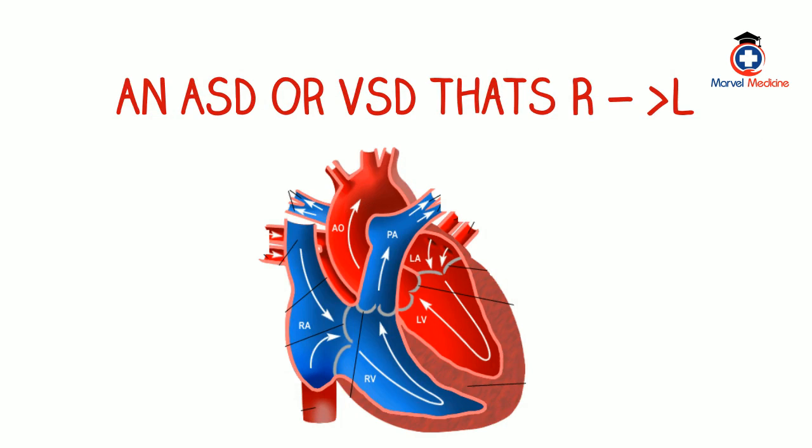What's another way to describe a shunt? An ASD, atrial septal defect, or VSD, ventricular septal defect, that's right to left, where deoxygenated blood goes from the right atria to the left atria, or from the right ventricle to the left ventricle.